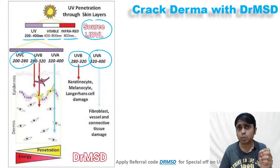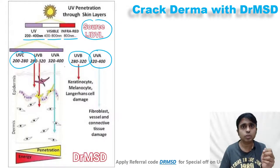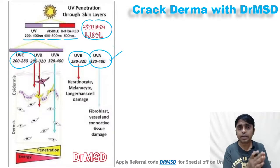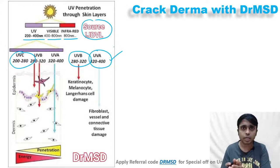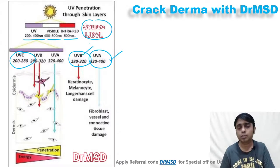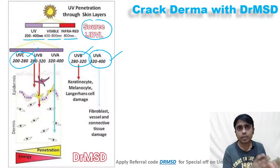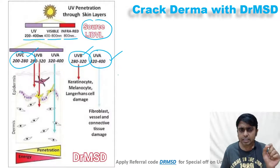You should remember these wavelengths as numerical questions have been asked previously. UVA ranges from 320 to 400 nanometers. UVB ranges from 280 to 320 nanometers. UVC ranges from 200 to 280 nanometers.